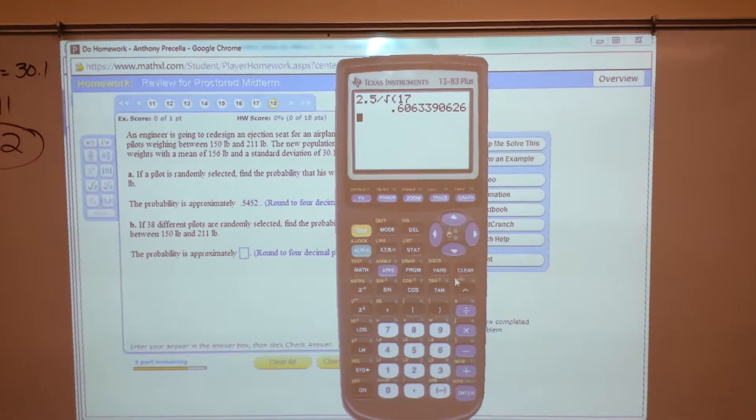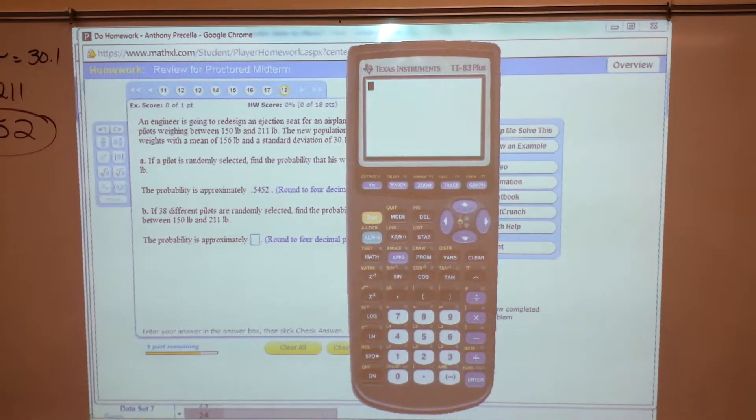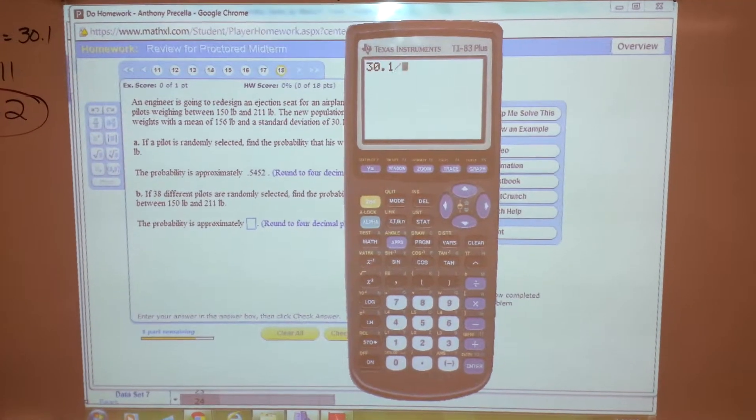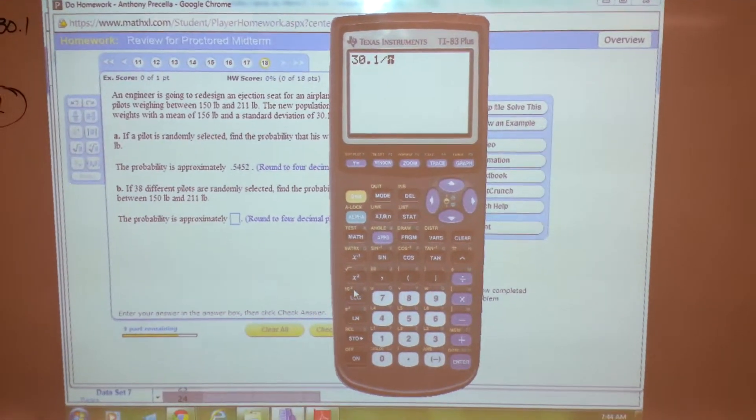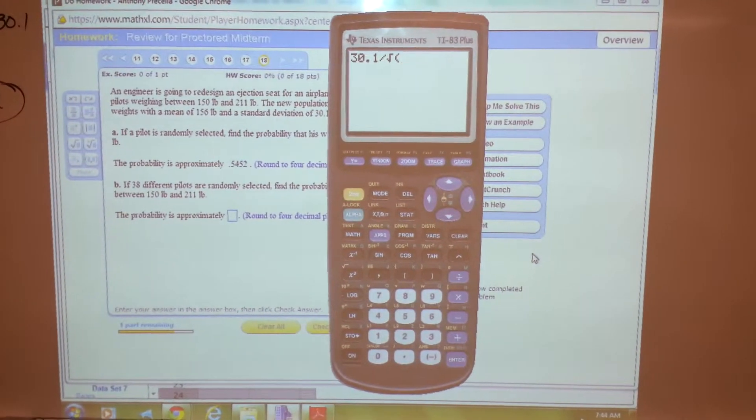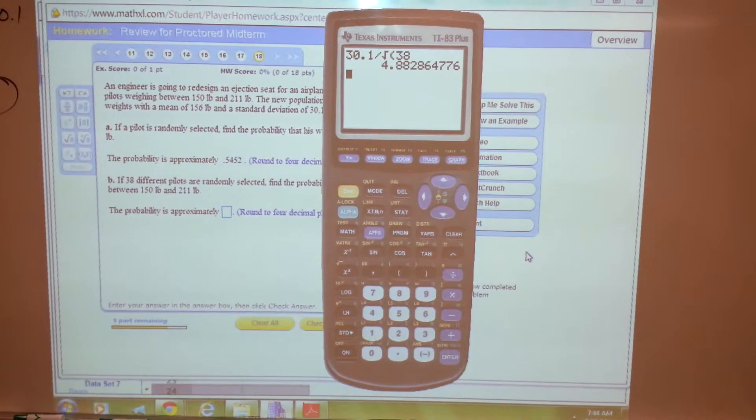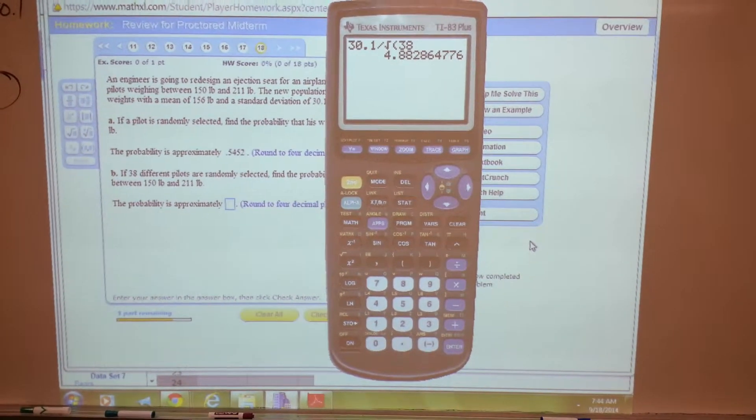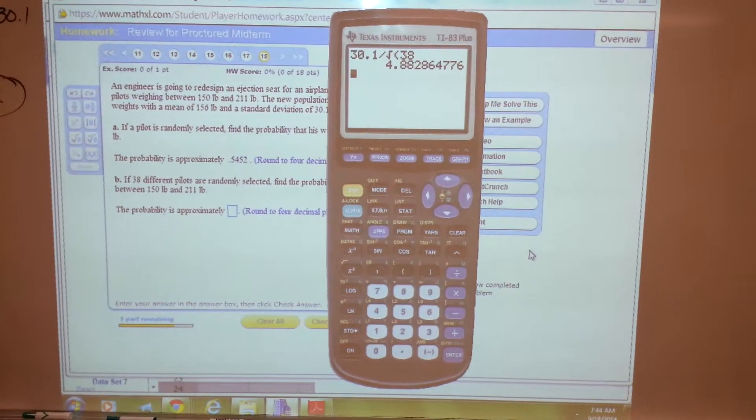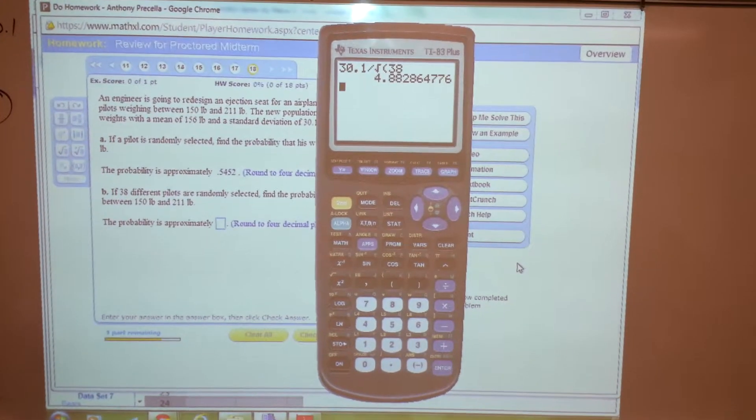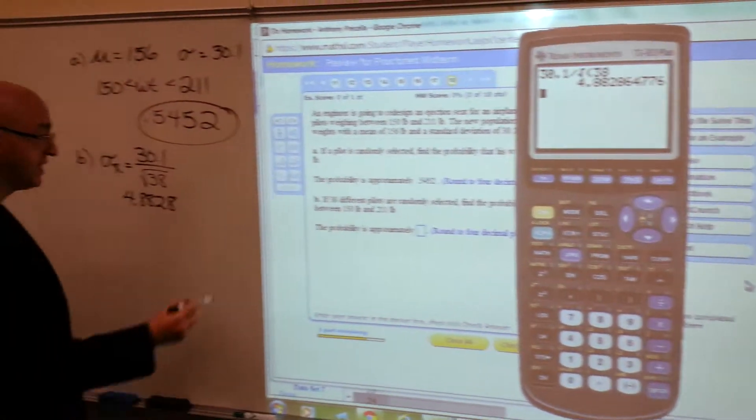So we have, let me clear that, 30.1 divided by the square root of 38. 4.882864776.